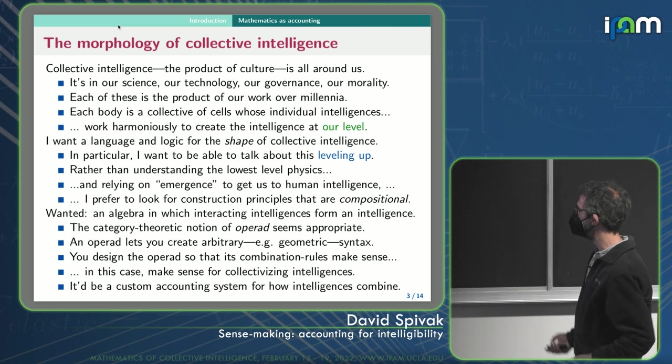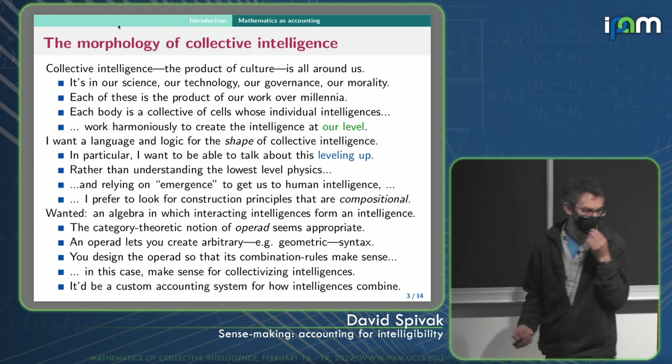And start to, in this case, try to figure out how would you put together intelligences to form an intelligence? So this operad would be a custom accounting system for how intelligences combine.